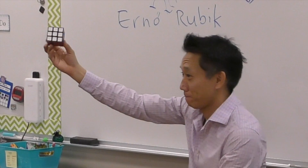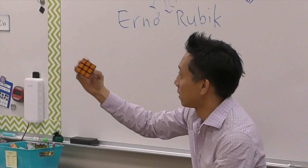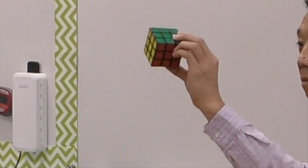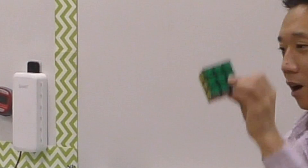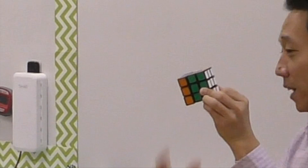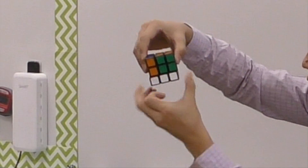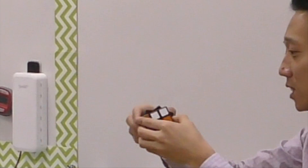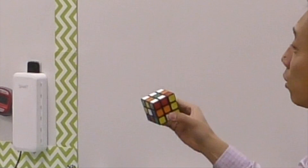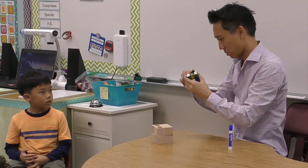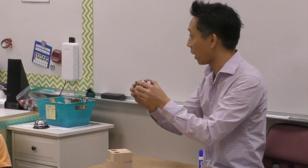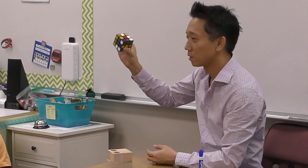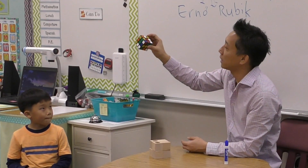Mr. Rubik built something which looked like this. He thought, "I did so well — I can turn it and it doesn't fall apart, I can turn another side and it doesn't fall apart." He kept on turning it and said, "This is great, this is so fun. Now let me put it back to the way it was." And he couldn't. He tried and tried and just couldn't put it back the way it was. He didn't realize at the time that he had made a puzzle.